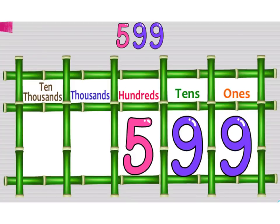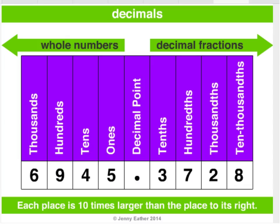In Ontario, when students reach grade four, they begin to add decimal numbers and have to understand that there's place value even after the decimal point, such as the tenth place in grade four, the hundredth place in grade five, and the thousandth place in grade six Ontario Curriculum.